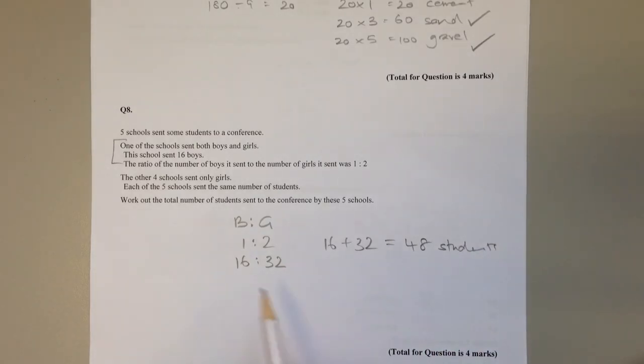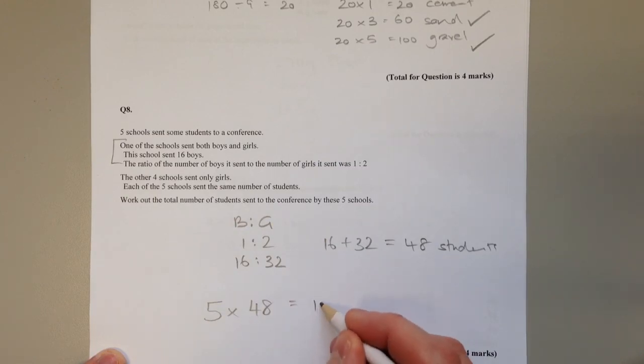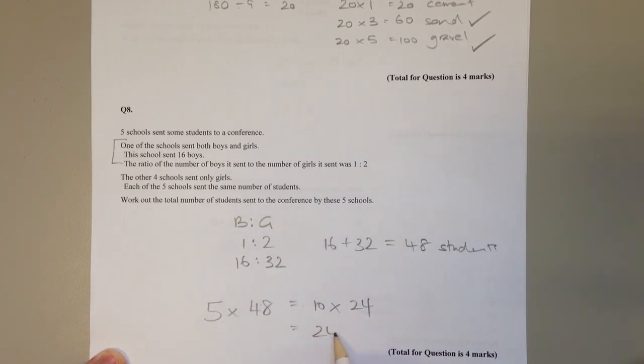Now the other 4 schools sent only girls. Each of the 5 schools sent the same number of students. So we have 5 schools each sending 48 students. The total number of students is therefore 5 times 48, which is the same as 10 times 24. Because if we double that and halve that, we get an equivalent calculation. And it's easier to see that that's 240.